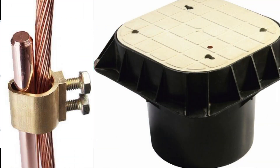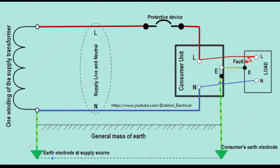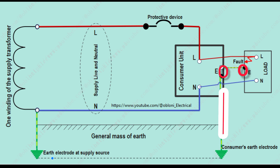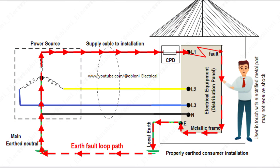In a TT earthing arrangement, all metal parts of the consumer's installation must be properly connected to the general mass of earth by means of an earth electrode. We have to bury that earth electrode in the ground. The reason for doing that is to provide a low resistance path for fault currents that may occur between live conductors and any metal parts in that installation, to flow to the general mass of the earth freely.